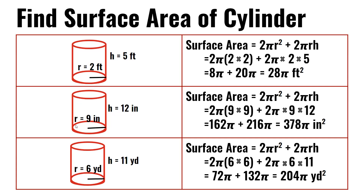For the second cylinder, the radius is 9 inches and the height is 12 inches. 2π(9×9) + 2π×9×12. 9×9 is 81; 81 times 2π is 162π. 2π×9×12 is 216π. 162π plus 216π is equal to 378π inches squared.